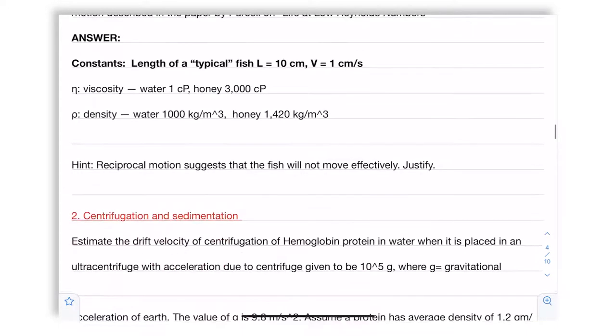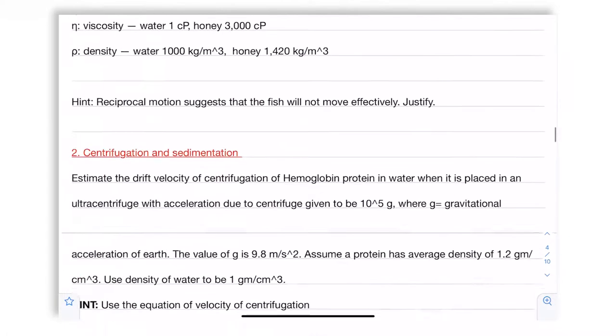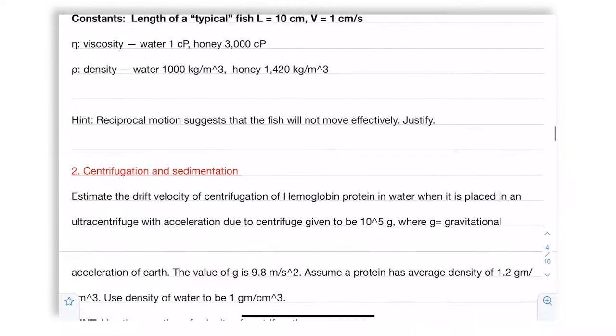Okay. The next question relates to centrifugation and sedimentation. So the question is as follows. We've been talking a lot about blood and centrifugation. So imagine that hemoglobin protein has been isolated and you are centrifuging it. Now hemoglobin can be assumed to be a globular protein. It's not a wrong assumption. That is in its name globin. The solvent in which it is suspended is water.